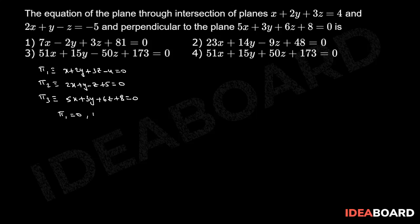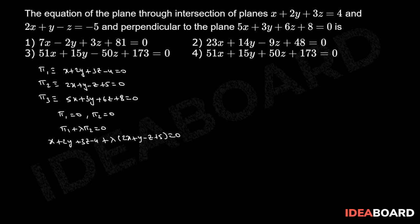The equation of the plane through the intersection of π1 = 0 and π2 = 0 is π1 + λ·π2 = 0. That implies: (x + 2y + 3z − 4) + λ(2x + y − z + 5) = 0, which simplifies to (1 + 2λ)x + (2 + λ)y + (3 − λ)z − 4 + 5λ = 0. Consider this as equation (1).